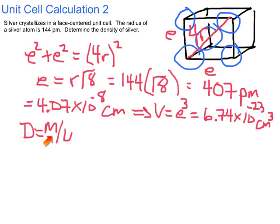Now I need to get the mass of a single unit cell. So the mass of my silver unit cell will be equal to the molar mass of silver. The molar mass of silver is 107.9 grams per mole.